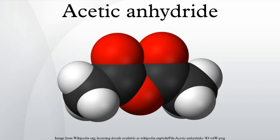Acetic anhydride is produced by carbonylation of methyl acetate: CH3CO2CH3 plus CO gives Ac2O. The Tennessee Eastman acetic anhydride process involves the conversion of methyl acetate to methyl iodide and an acetate salt. Carbonylation of the methyl iodide in turn affords acetyl iodide, which reacts with acetate salts or acetic acid to give the product. Rhodium chloride in the presence of lithium iodide is employed as catalyst. Because acetic anhydride is not stable in water, the conversion is conducted under anhydrous conditions.